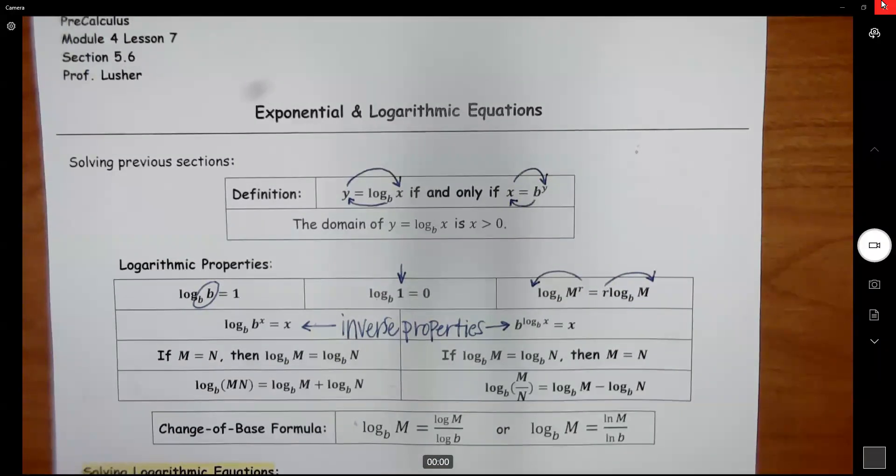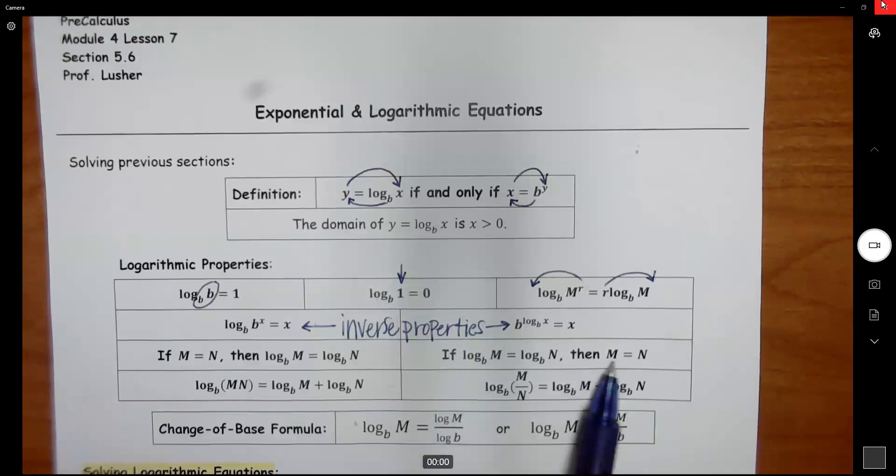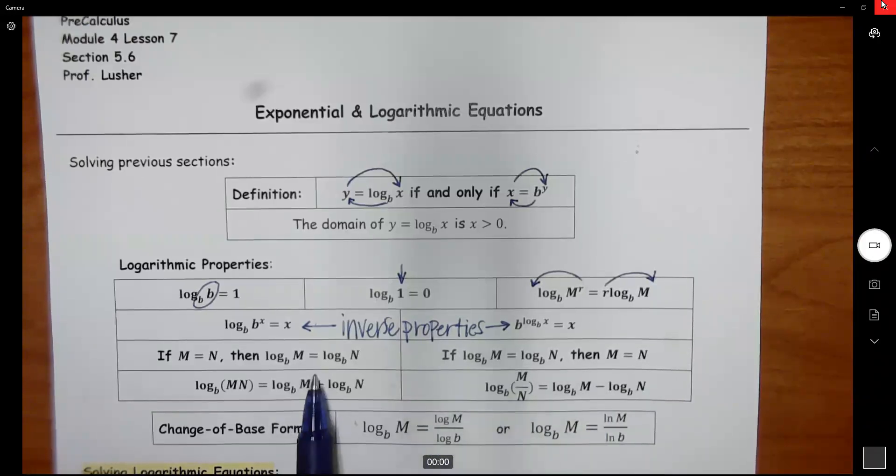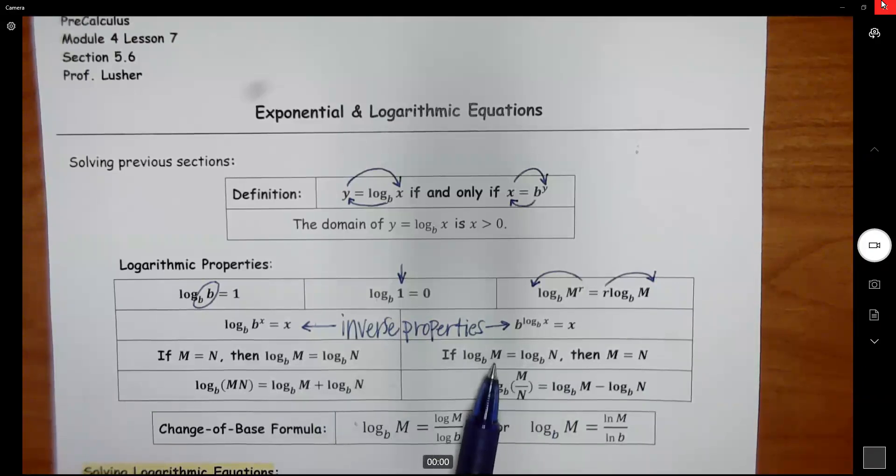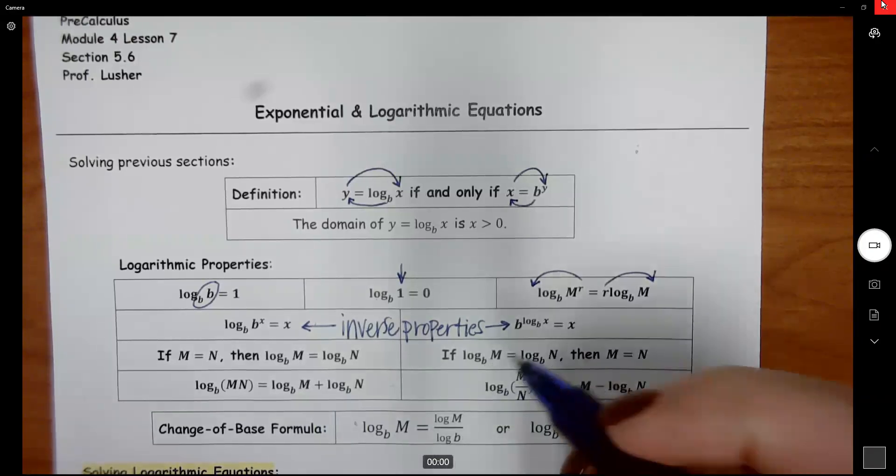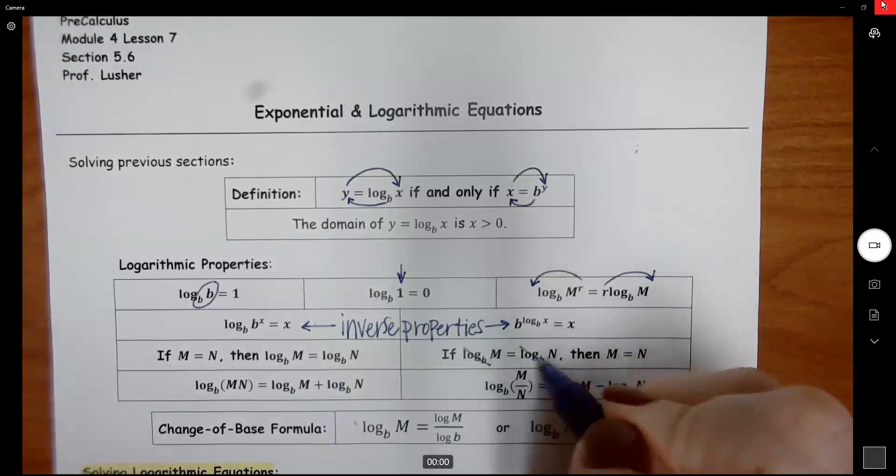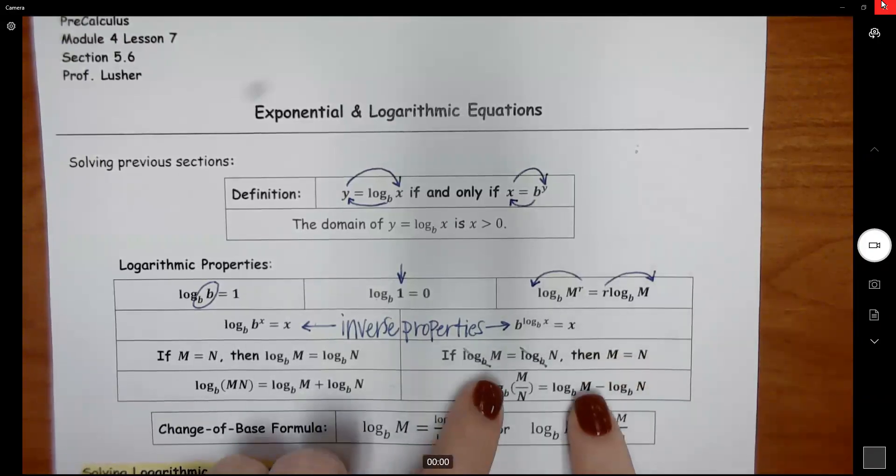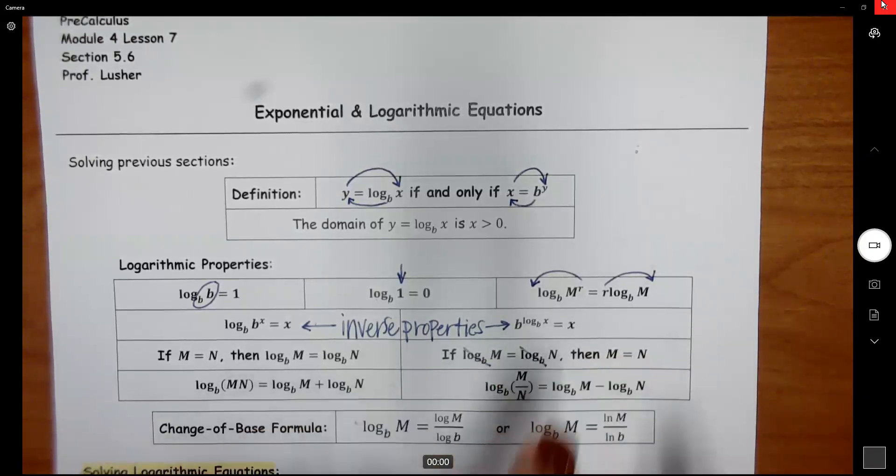We're going to start this lesson off with this property here, and it does work both ways. I'm going to focus more on this one first. If you have log base b of m equals log base b of n, then what you do is because those logs have the same base, you cancel them out, and now you just have m equals n.